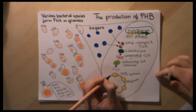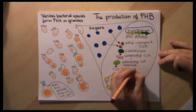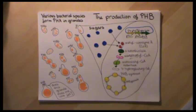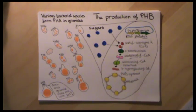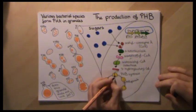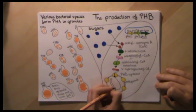Acetoacetyl coenzyme A reductase reduces this to 3-hydroxybutyryl coenzyme A.